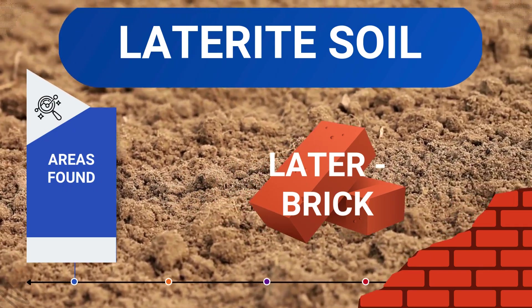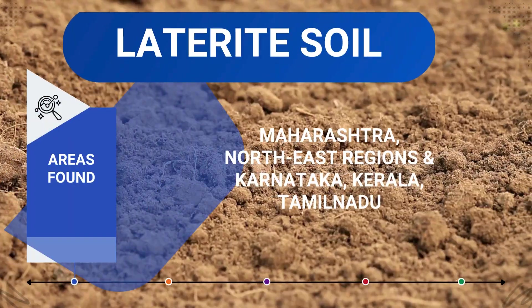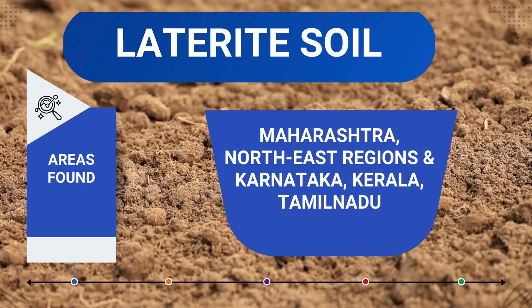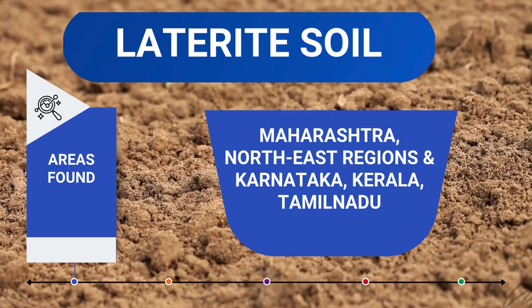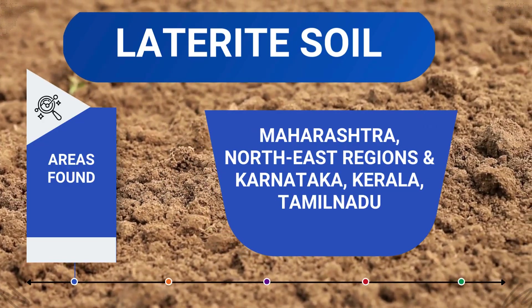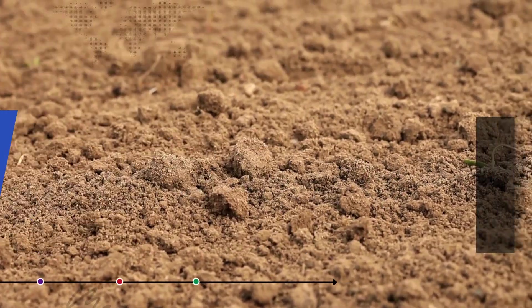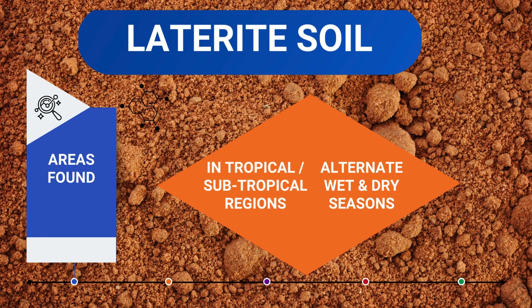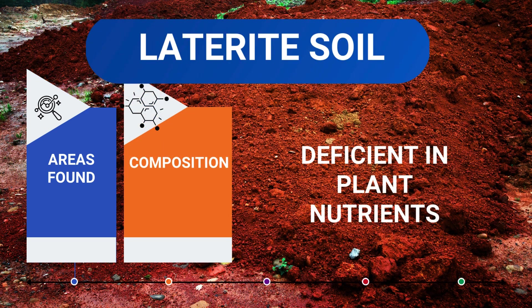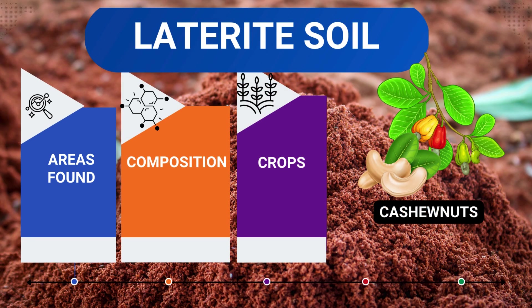The next soil type is Laterite Soil, which comes from the Latin word 'Later' meaning Brick. This soil is found along Maharashtra, northeast regions of India, and also in certain southern states like Karnataka, Kerala and Tamil Nadu. Found in tropical and subtropical regions with alternate wet and dry seasons, the soil is deficient in plant nutrients. However, it supports cultivation of plants like cashew nut and plantation crops like tea and coffee.